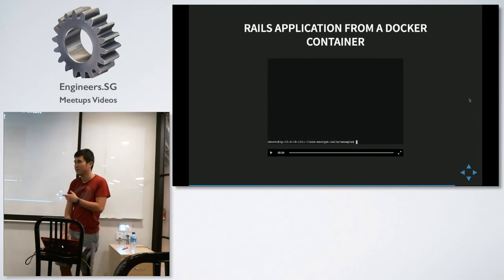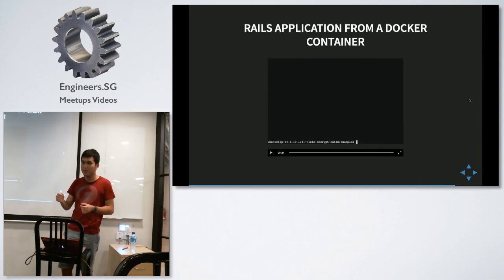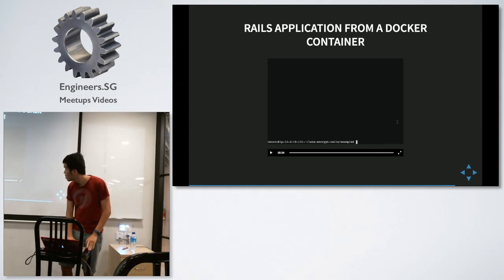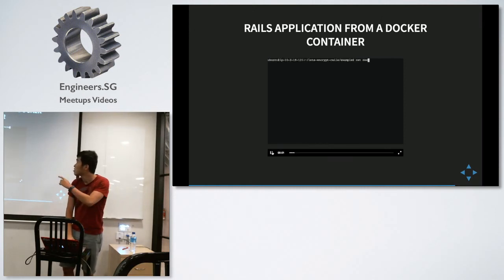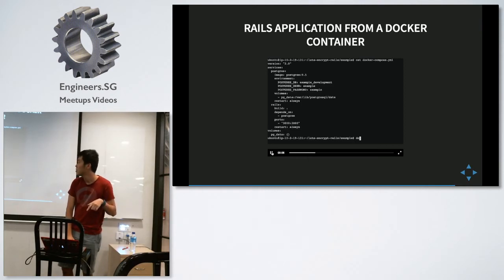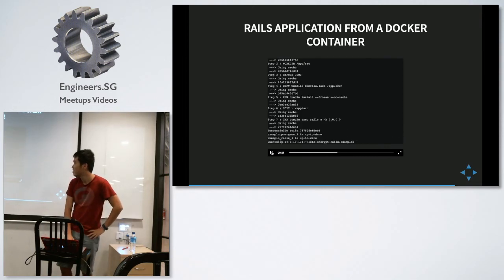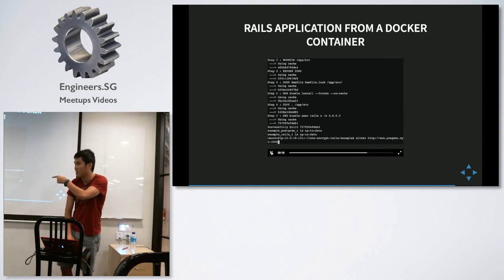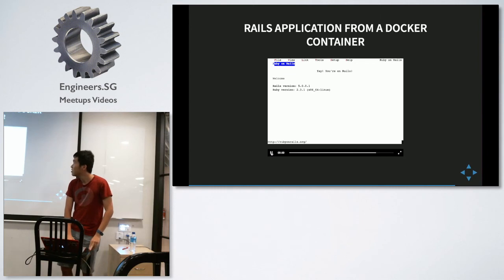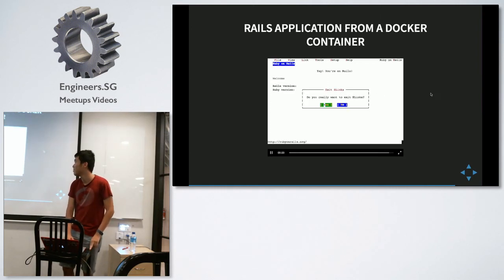So the first demo is just the Rails application running off the Rails server without any reverse proxy, using Docker Compose. This is the Docker Compose file I showed you just now. I'm just going to do docker-compose up with some extra flags. And I'm going to use a text-based browser to show you that it works. You'll notice that I still have to use port 3000. That's the first one. Simple.